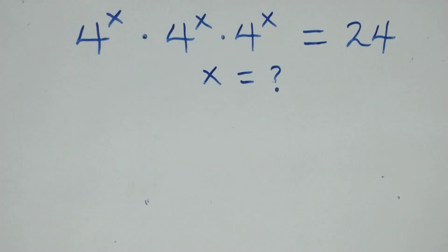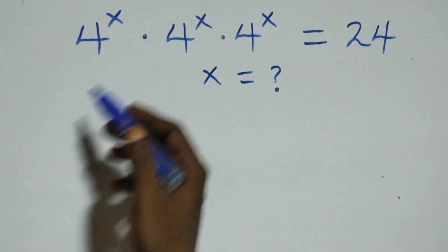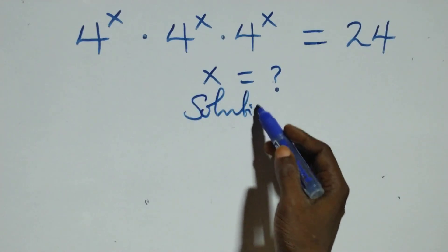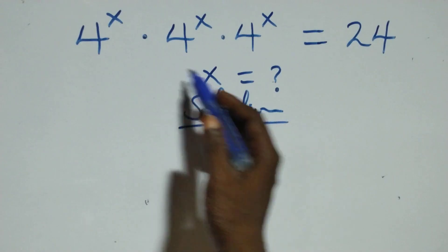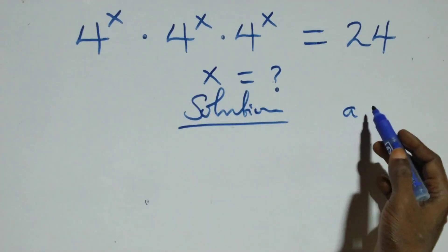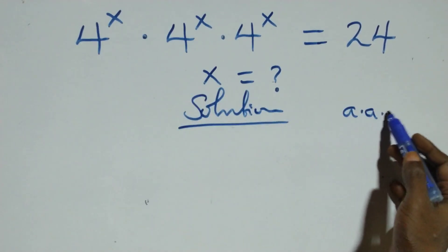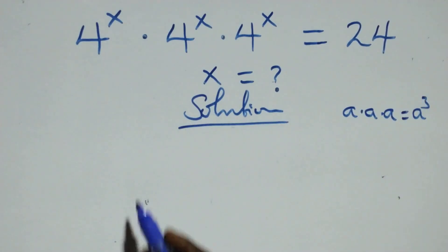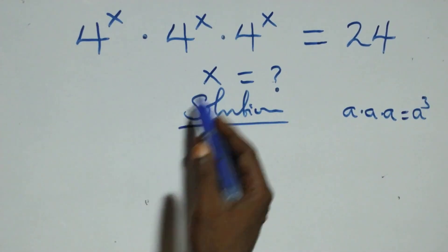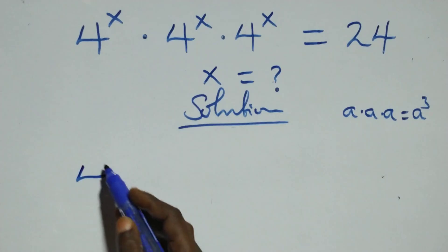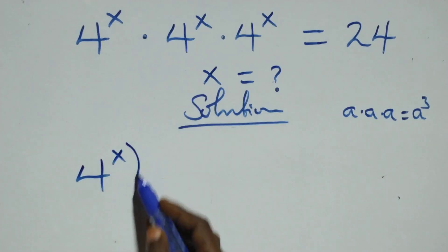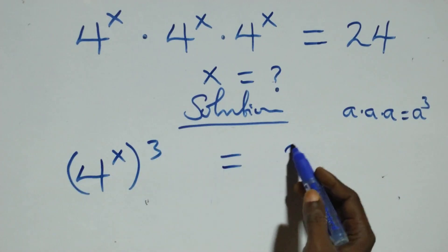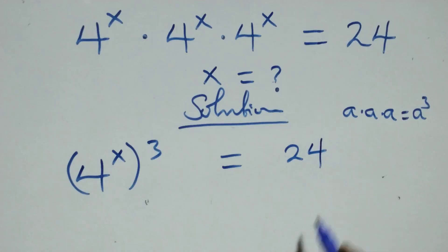Hello, you're welcome. How to solve this nice exponential equation. From what we have here, this follows: we multiply the same thing three times — a times a times a is the same thing as a cubed. This multiplier itself will have four raised to power x, raised to power three, then equals twenty-four on this side.